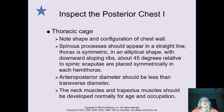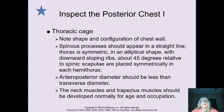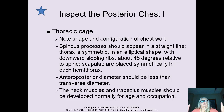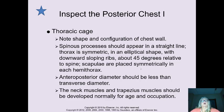Gathering objective data is a very important part. We're going to look at the shape of the thoracic cage, noting the shape and configuration of the chest wall. We're looking at the width from front to back versus side to side. Front to back should be half as big as side to side, or side to side should be twice as large as front to back.